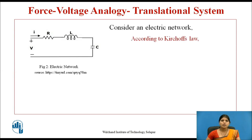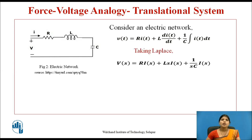According to Kirchhoff's law, the equation can be written as: V(t) = R·i(t) + L·(di(t)/dt) + (1/C)·∫i(t)dt. Taking the Laplace of both sides, the equation becomes: V(s) = R·I(s) + Ls·I(s) + (1/sC)·I(s).